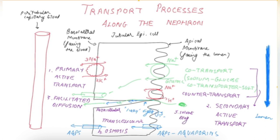To summarize: primary active transport is mediated by the sodium-potassium ATPase pump; secondary active transport by sodium-glucose co-transport and sodium-hydrogen antiporter; facilitated diffusion through integral membrane proteins; and osmosis of water through aquaporins, through the paracellular route, and solvent drag. Thank you. I am Dr. Swapnil.